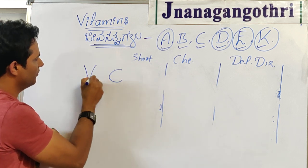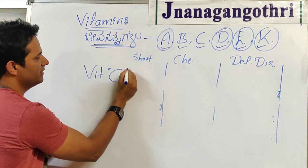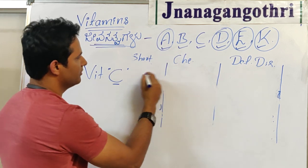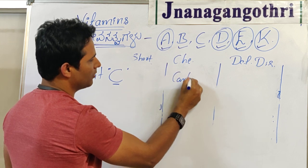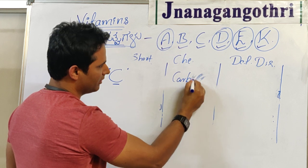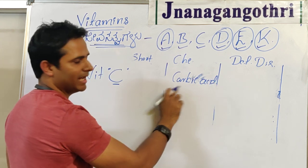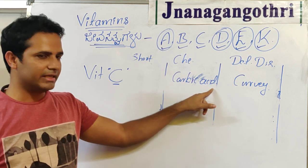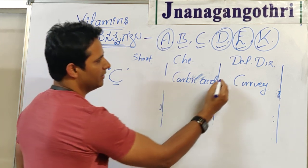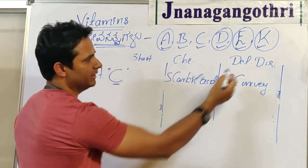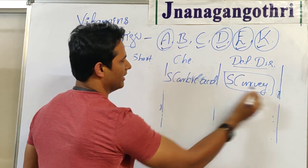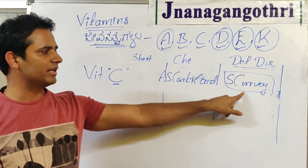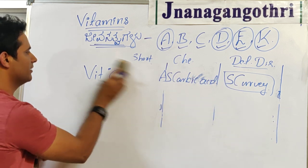For vitamin C, the chemical name starts with C and the deficiency disorder also starts with C. This is how you can remember vitamin C.